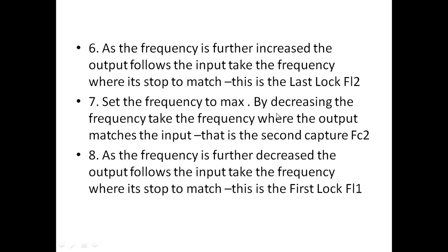Set the frequency to max. By decreasing the frequency, take the frequency where the output matches the input. That is called second capture FC2. As the frequency is further decreased, the output follows the input. Take the frequency where it stops to match. This is called first lock FL1.